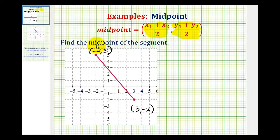And now if we call this x sub one and this y sub one, and this x sub two and this y sub two, the x coordinate of the midpoint will be negative two plus three divided by two, and the y coordinate will be five plus negative two divided by two.